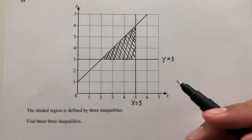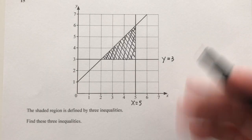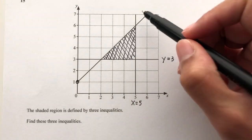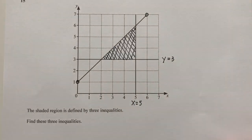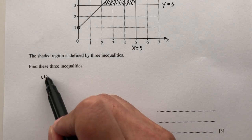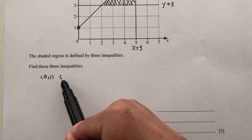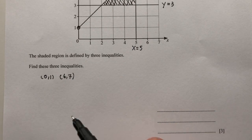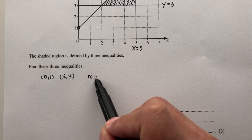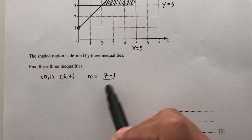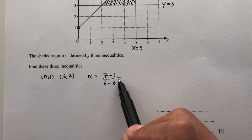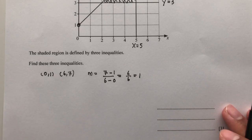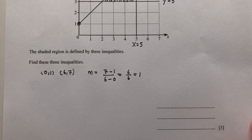For this one we don't know what it is, but we can find the equation by using two points on the line. Let's say I choose this point and this point. One point is (0,1) and then I have (6,7). To find the equation of a line we must first find the gradient: m equals y2 minus y1 over x2 minus x1, so the gradient is equal to 6 over 6, which is 1.